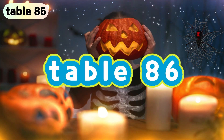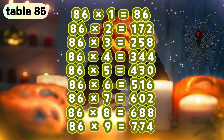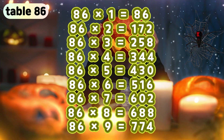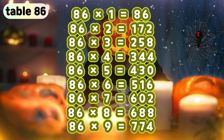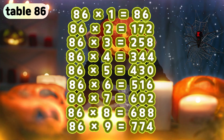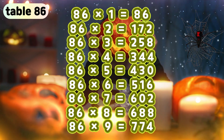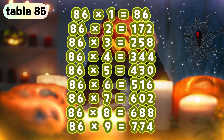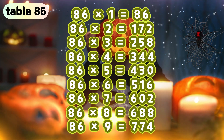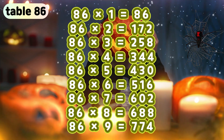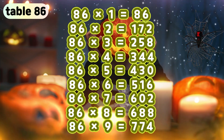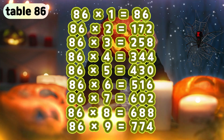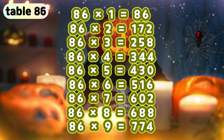Table 86. 86 times 1 is 86. 86 times 2 is 172. 86 times 3 is 258. 86 times 4 is 344. 86 times 5 is 430. 86 times 6 is 516. 86 times 7 is 602. 86 times 8 is 688. 86 times 9 is 774.